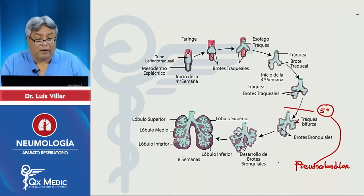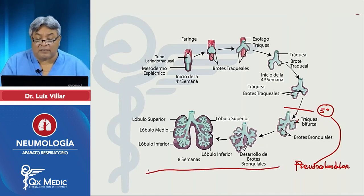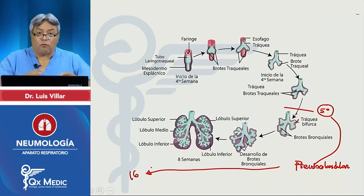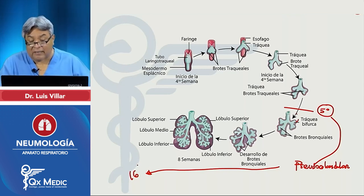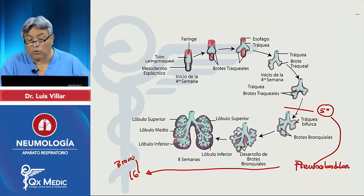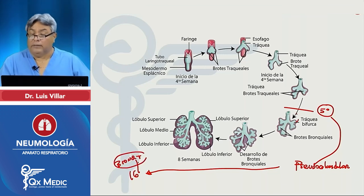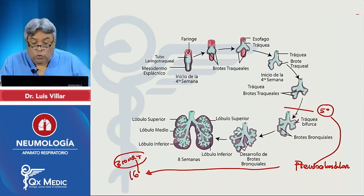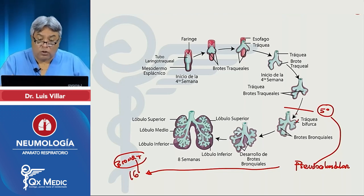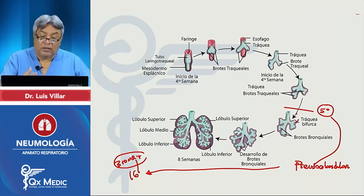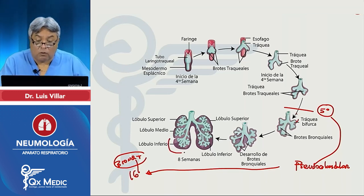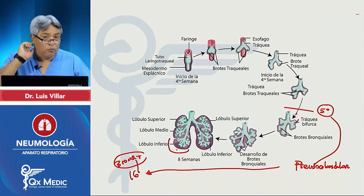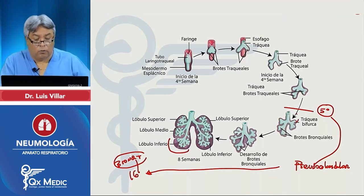El periodo pseudoglandular va a durar hasta la semana 16 y va a ir formando todo el árbol bronquial, hasta terminar con el bronquiolo terminal — ojo, ya no con bronquio sino bronquiolo terminal. La estructura fundamental de los bronquios y el futuro pulmón queda esbozada completamente en la octava semana con las bifurcaciones del árbol bronquial.